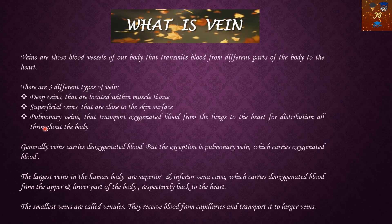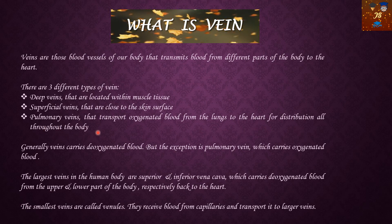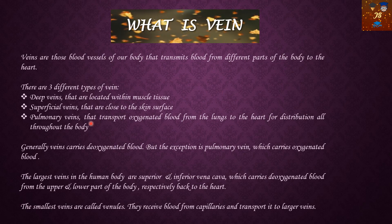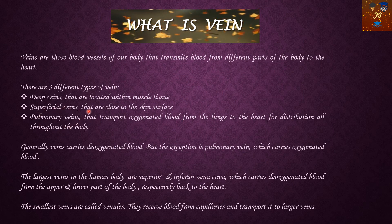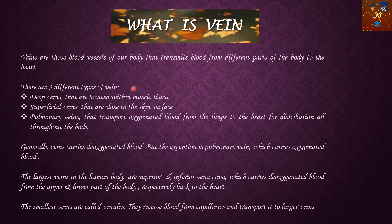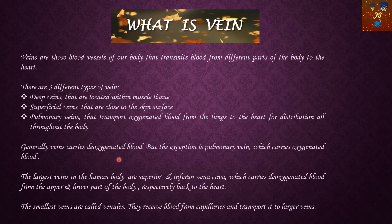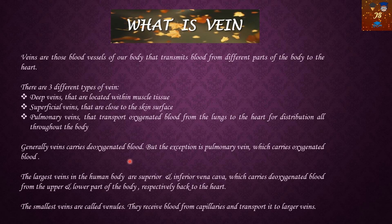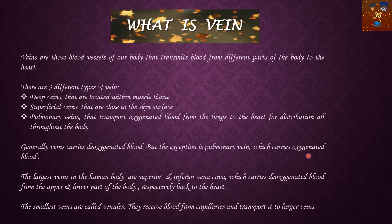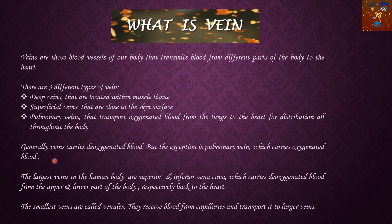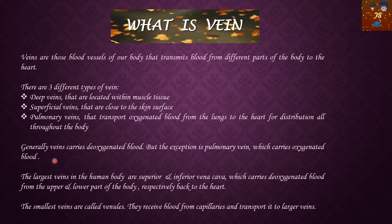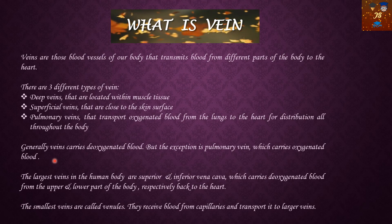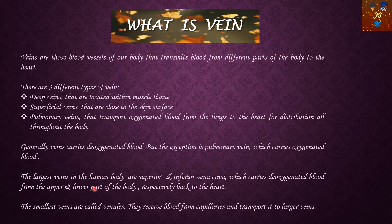The pulmonary vein transports oxygenated blood from the lungs to the heart for distribution throughout the body. We can see that the pulmonary vein is the exception — all other veins carry deoxygenated blood from the body to the heart. Only the pulmonary vein carries oxygenated blood, similar to the exception we discussed regarding the pulmonary artery.